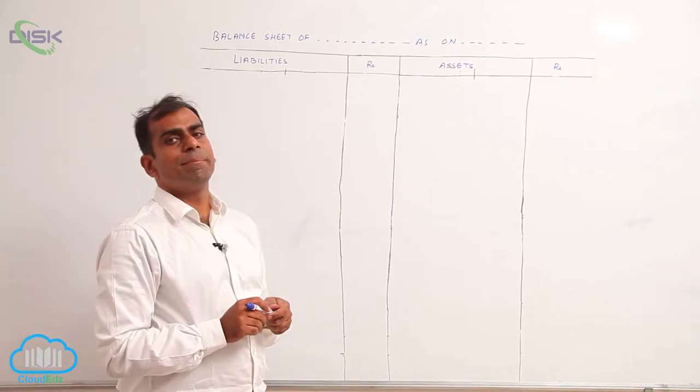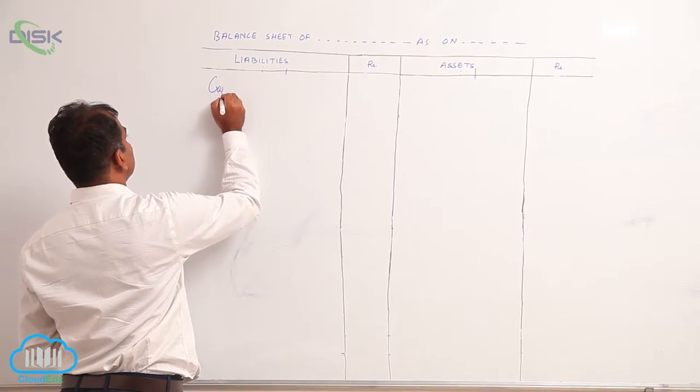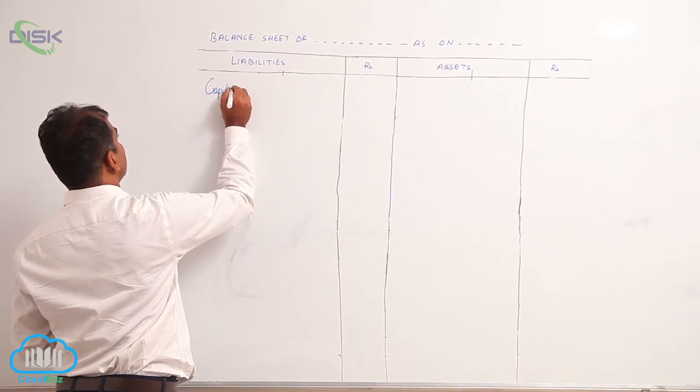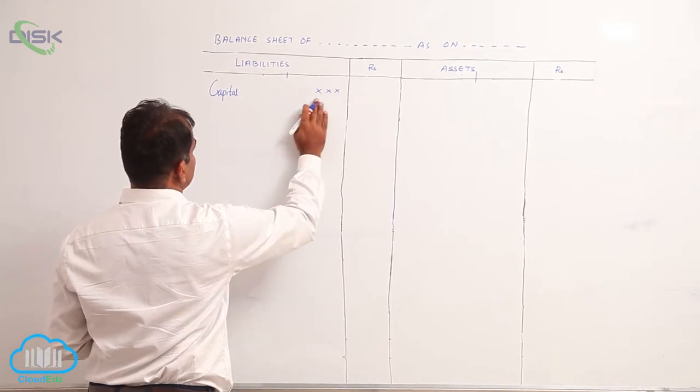One important thing to remember is the representation of capital, that is the money which the owner gives. This is how capital appears in the balance sheet.